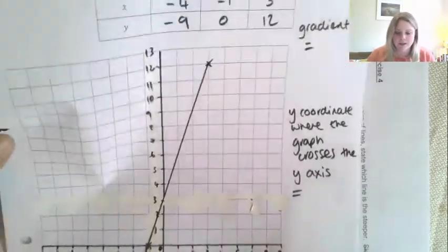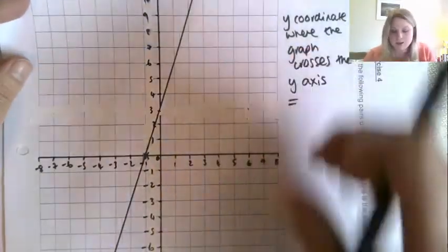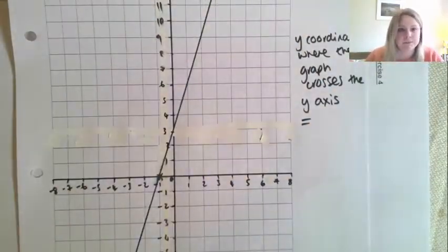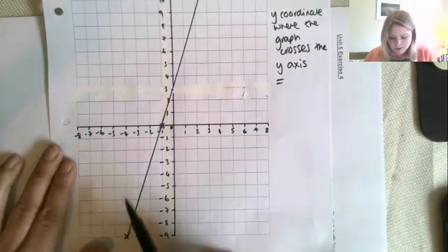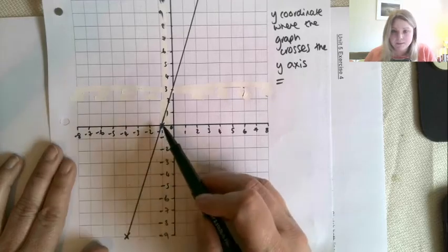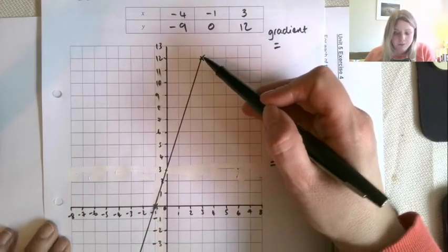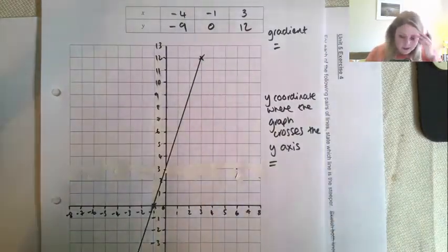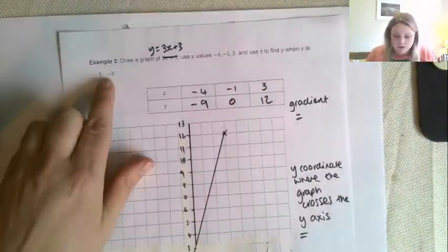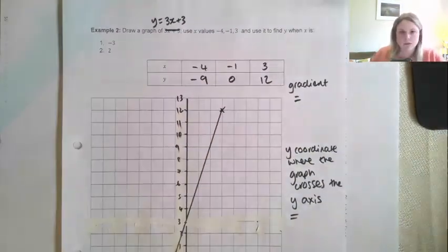So you can see here my horrendously messy graph. This is why we use pencil. Okay, so hold on, I'll zoom that out a little bit. So there's my three points: my minus 4, minus 9, my minus 1, 0, and my 3, 12.